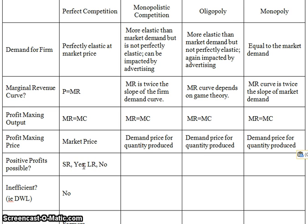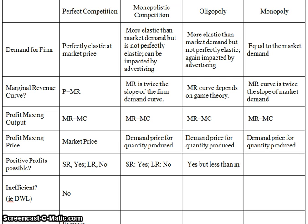For perfect competition, firms can have profits in the short run but not in the long run. The same goes for monopolistic competition, because low to no barriers to entry mean new firms will enter profitable markets. For an oligopoly, it is possible to have long-run profits, but these are less than monopoly profits because multiple firms are sharing the monopoly profits, so each gets a smaller slice.